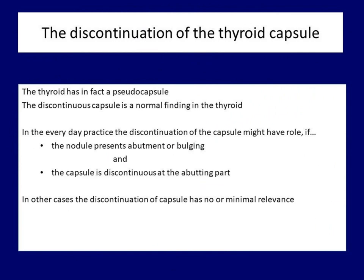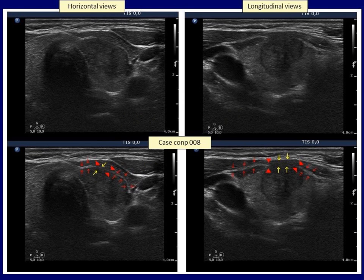Let's see first the thyroid capsule. Unfortunately, the thyroid does not have a real capsule, only a pseudo-capsule. The outer layer of this pseudo-capsule does not cover the entire thyroid gland — it only connects the thyroid to other organs of the neck. Consequently, a discontinuous pseudo-capsule is a normal finding. Extrathyroidal spread can be raised if the capsule is discontinuous and the contour is abutting. The discontinuation has no relevance if the nodule is covered by normal tissue. The capsule, an echogenic line, is pointed with red arrows and is discontinuous between red arrowheads. In deeply hypoechoic nodules, the echogenicity of the nodule is identical to that of the strap muscle — see yellow arrows.